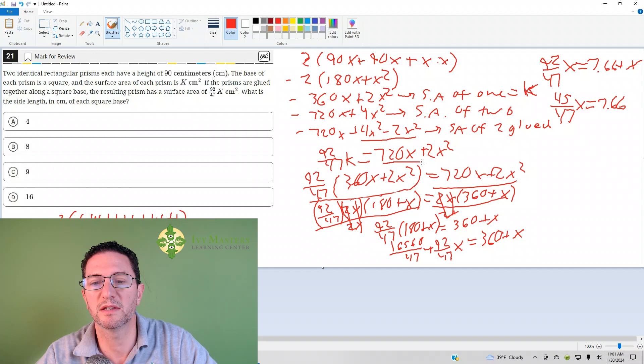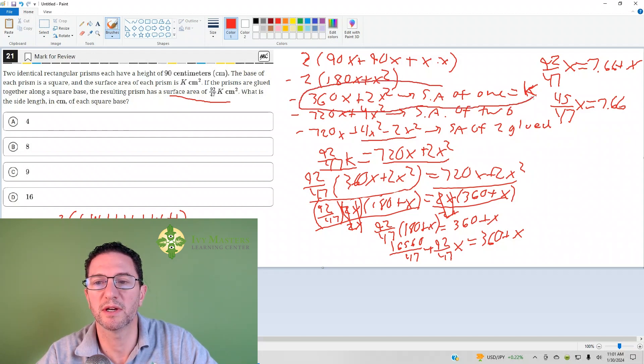So this is the surface area of the two prisms after they're glued. And it also tells us that that surface area is 92 over 47k centimeters squared. So I set it equal to that. And now what I've got to do is, what is that k? We have that k up here. It's 360x plus 2x squared. And so I put that in place of the k right here. So I've got my 360x plus 2x squared.